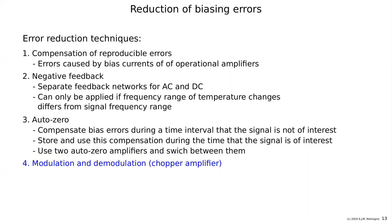The last technique, also sometimes called AutoZero, is to bring the signal to a frequency range that differs from where the noise is — where noise means temperature changes. If you want to amplify very low frequency signals where temperature variations cannot be distinguished from signal variations, you first shift your signal to another frequency range, amplify there, then bring it back to the original frequency range where it is much larger and temperature changes are no longer relevant.